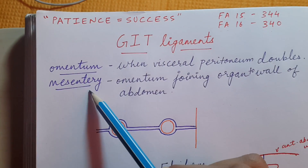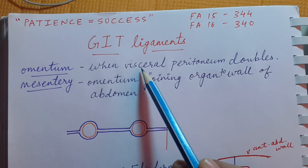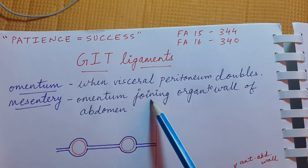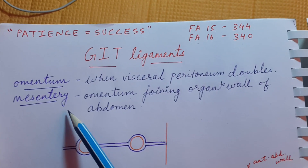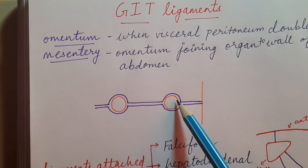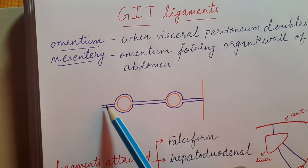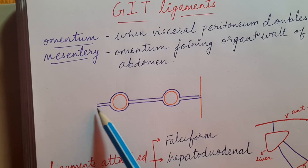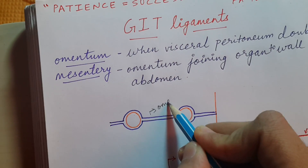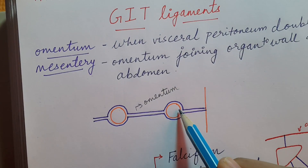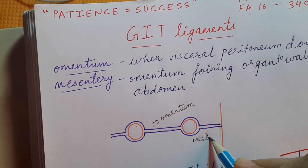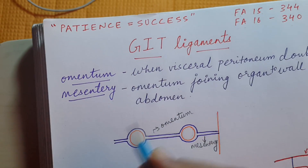First, understand the meaning of omentum and mesentery. When the visceral peritoneum doubles, it is called omentum. When the omentum joins the organ to the wall of the abdomen, it is called mesentery. The place where the visceral peritoneum doubles is called omentum, and when the omentum connects the organ to the abdominal wall, it is called mesentery.